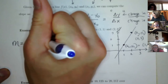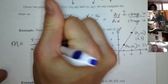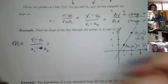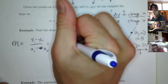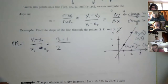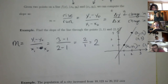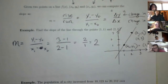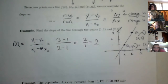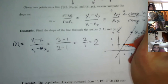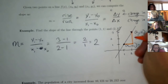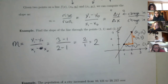Let's try a more practical example involving the population of a city. The population increased from 10,000 to 20,000 over five years. Find the rate of change. Let P be the population and T be the number of years. I'll say year zero has P(0) equals 10,000, and five years later P(5) equals 20,000.